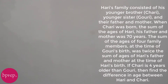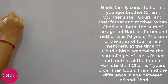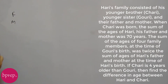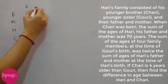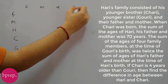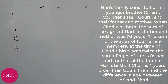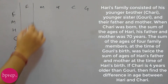When Chari was born, the sum of ages of Hari, his father and mother was 70 years. Let's map their family: Hari's father and mother, then Hari himself, and then Hari's younger brother Chari and younger sister Gauri — so they are in this order. Let's label them f, m, h, c and g. This is our grid.